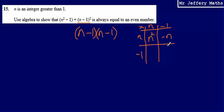minus n minus n, then negative 1 times negative 1 gives positive 1. So simplifying this gives n² - 2n + 1.